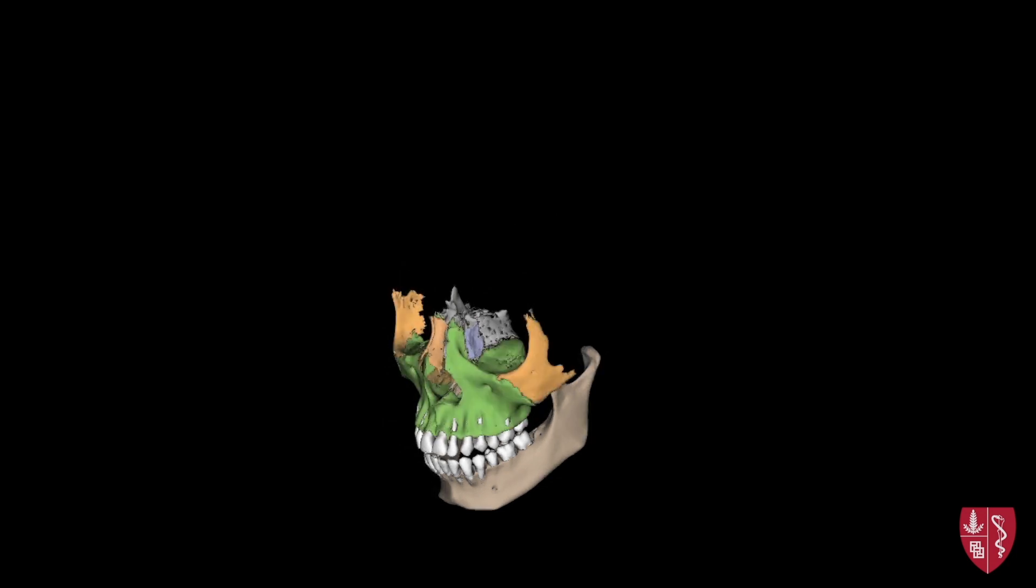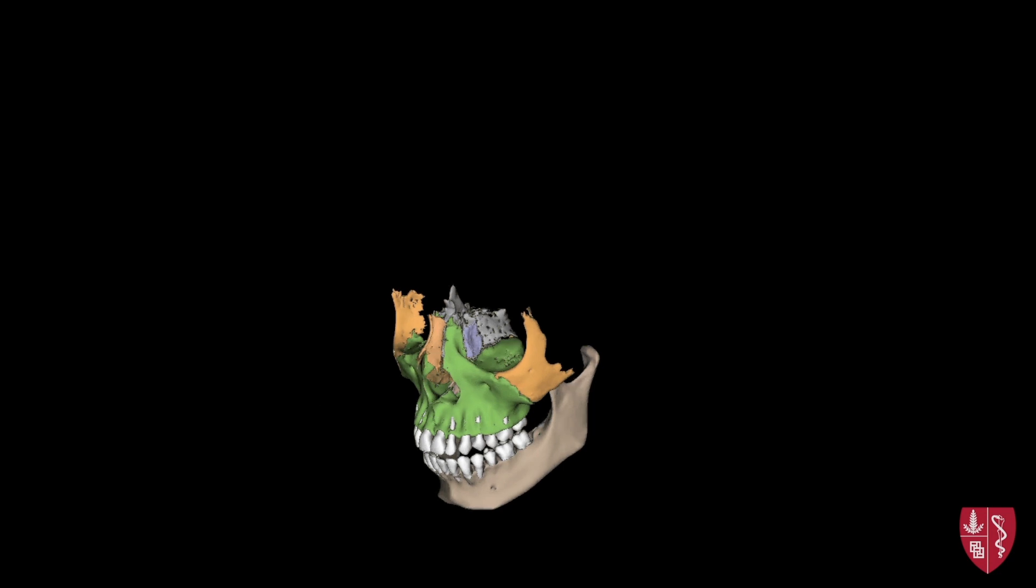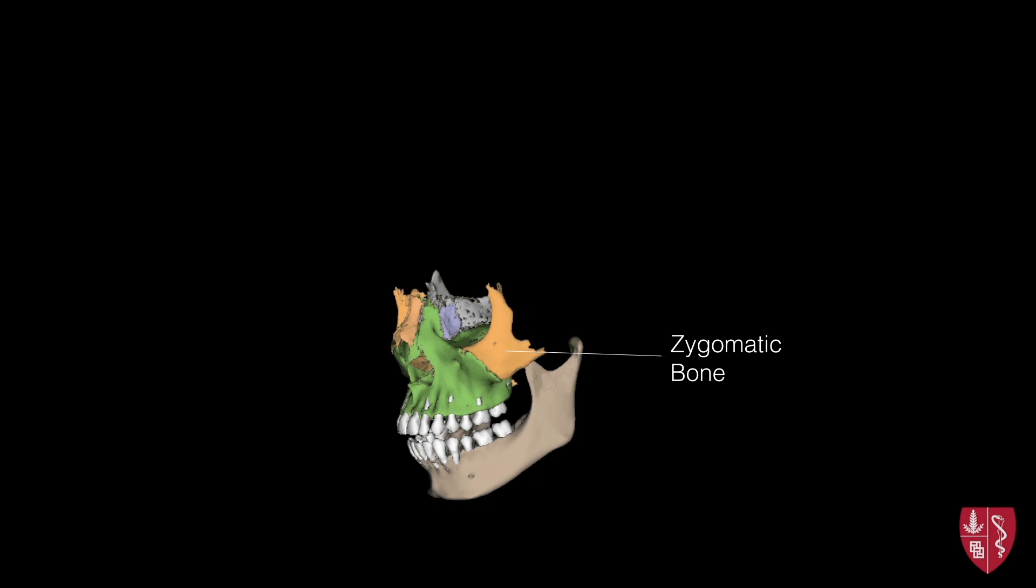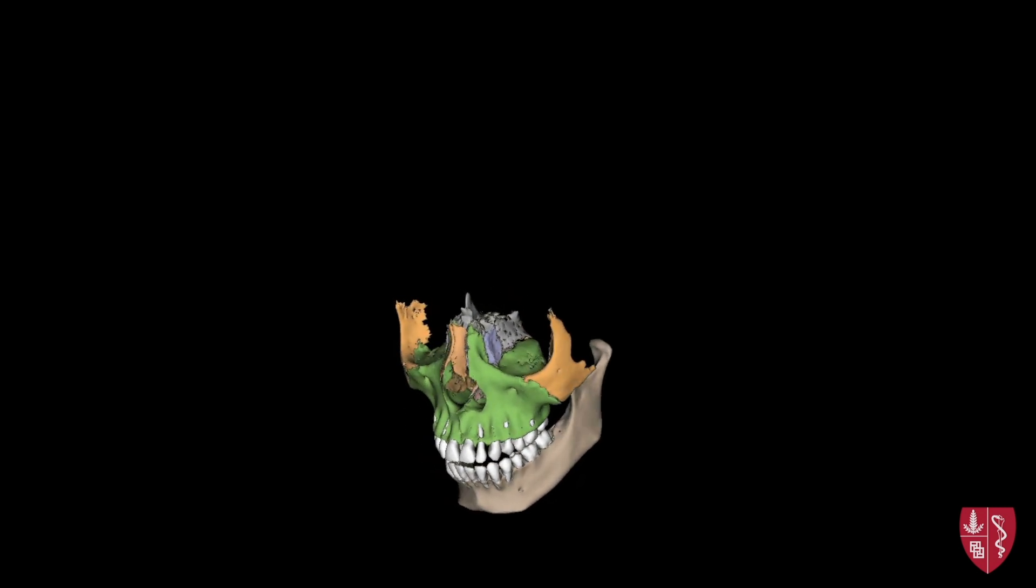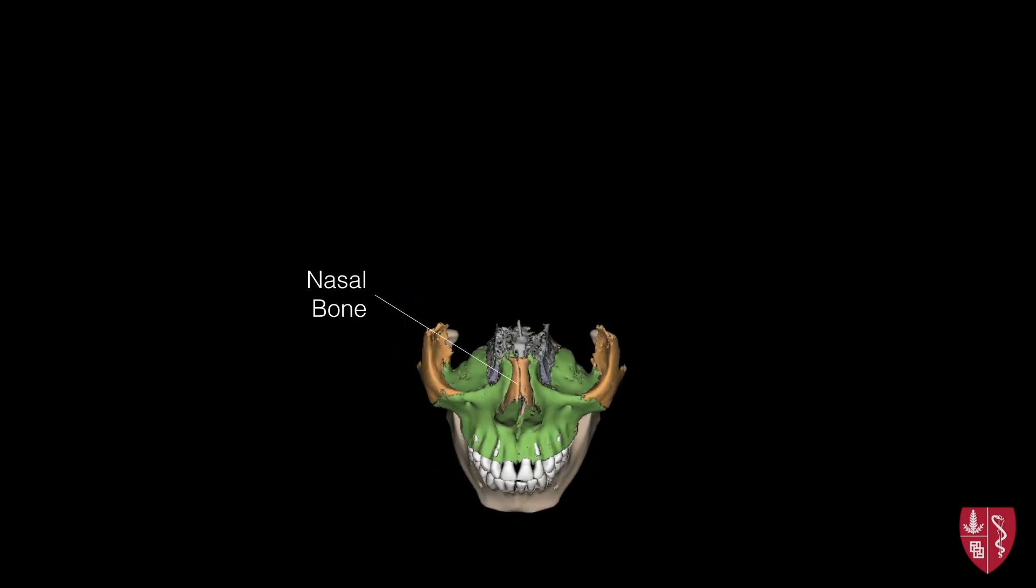As well as six paired bones which occur bilaterally on both sides of the face. The maxilla, which serves as the attachment site for the upper dentition or upper teeth. The zygomatic bones, or the cheek bone. The nasal bones, on the superior aspect of the nose or the bridge of the nose.